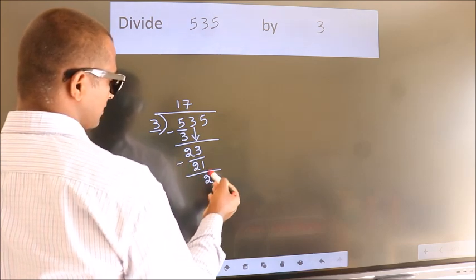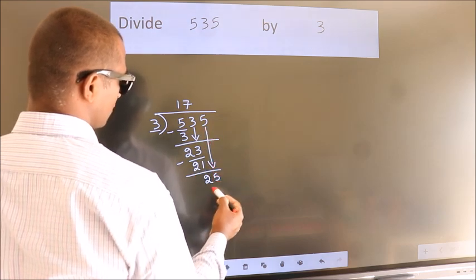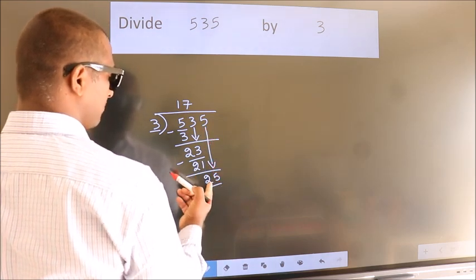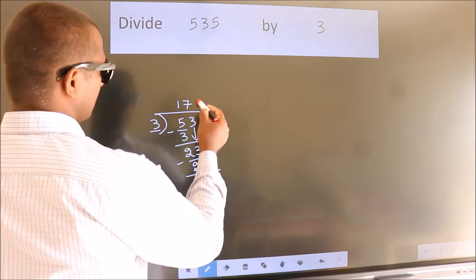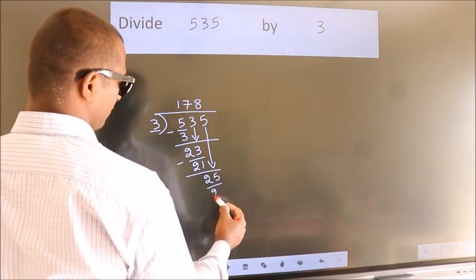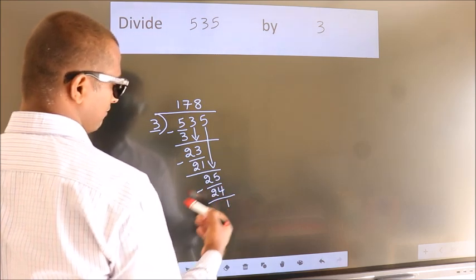After this, bring down the beside number. So 5 down. So 25. A number close to 25 in the 3 table is 3 times 8, which is 24. Now we subtract. We get 1.